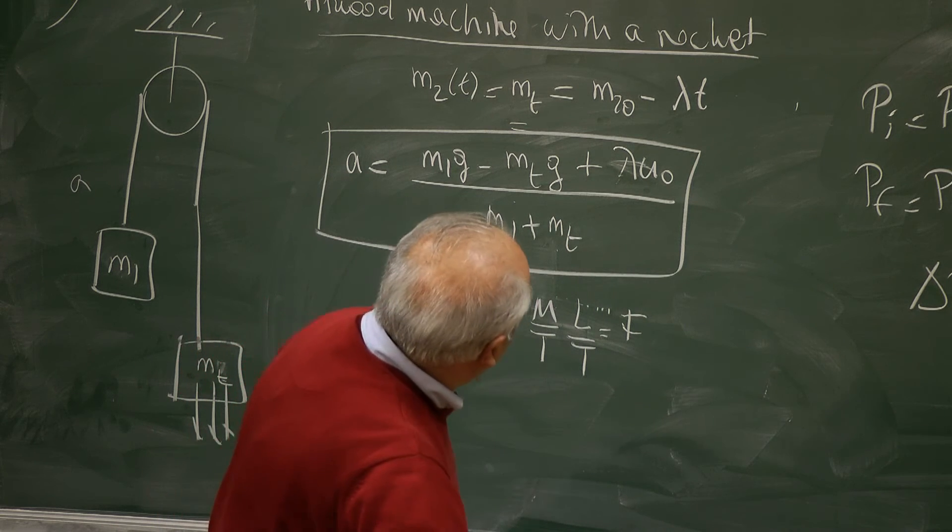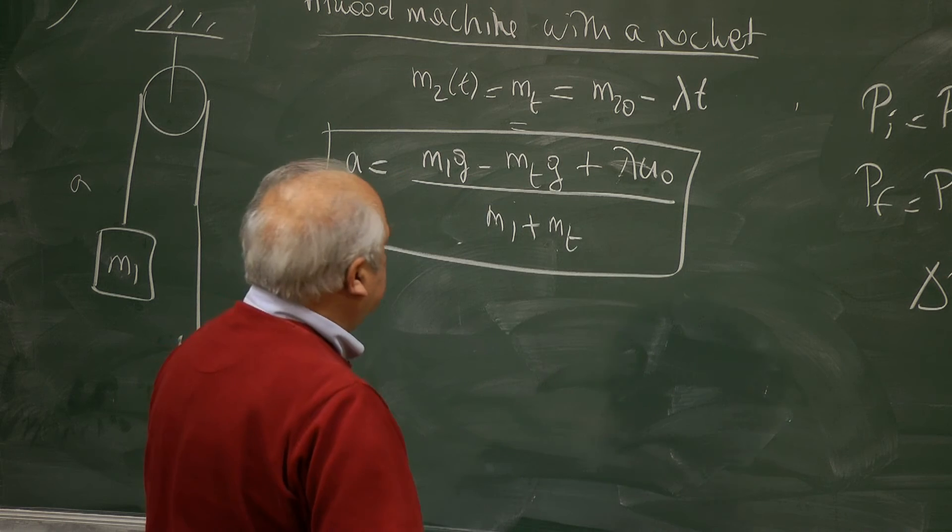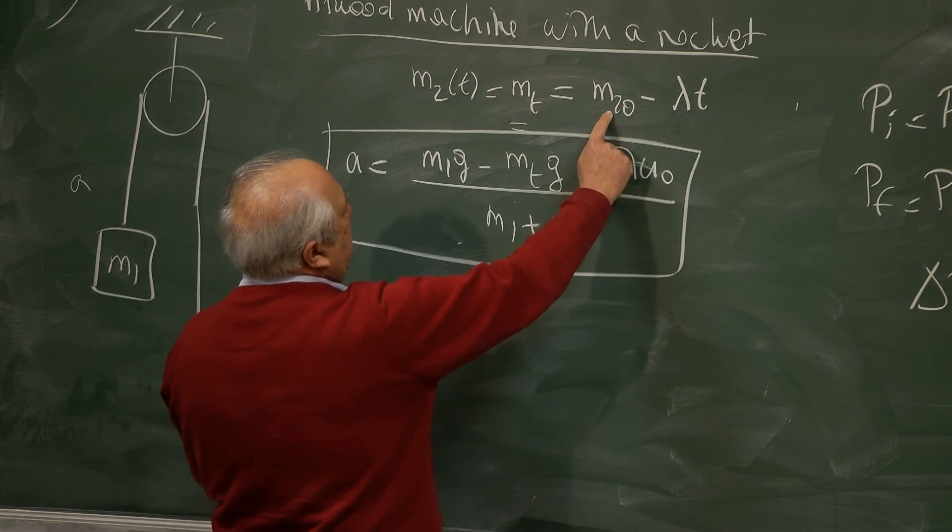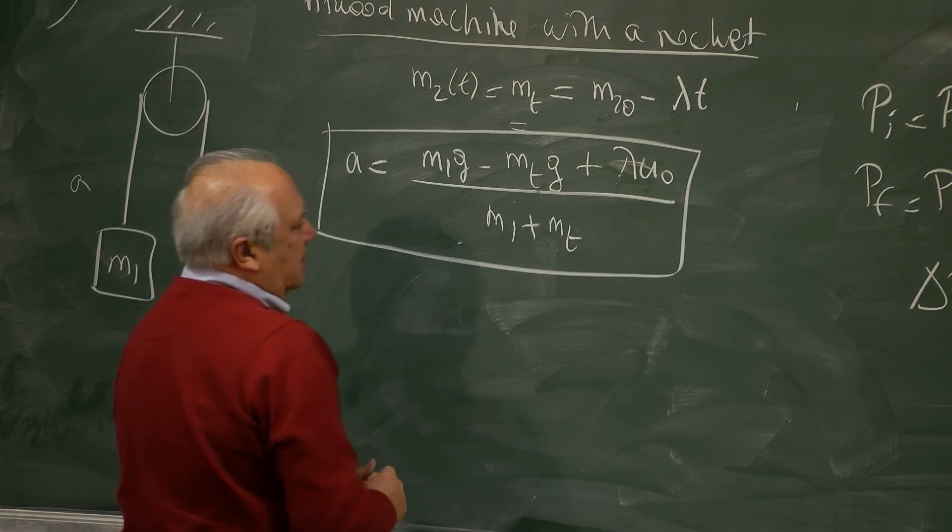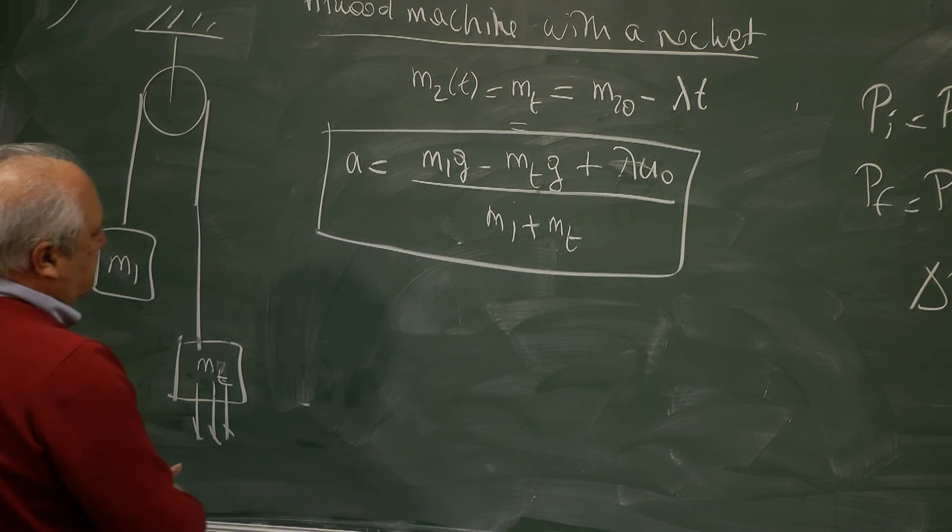If lambda is zero, no ejection, then I have M2 zero. Then that's the result of the classical Atwood without any rocket mechanism.